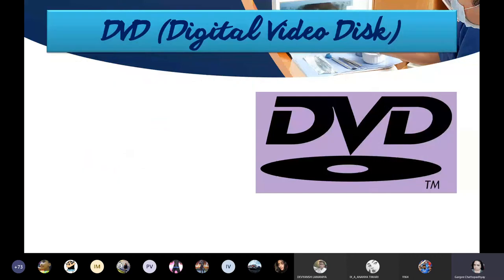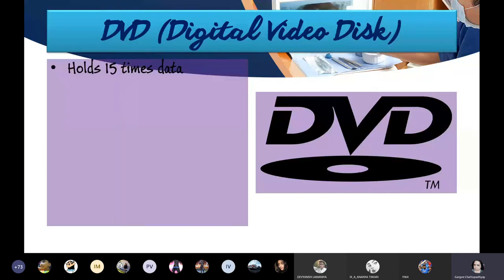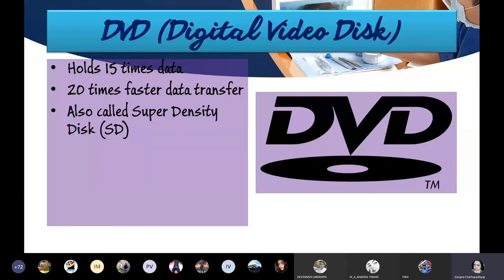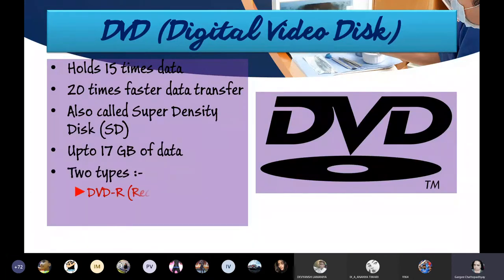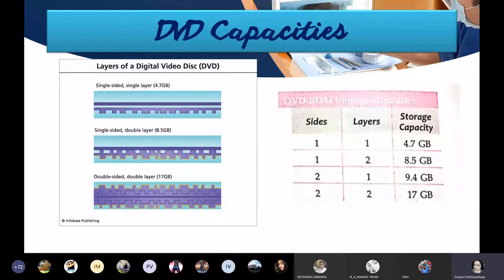Next is DVD. It holds 15 times more data compared to a CD and is 20 times faster in data transfer. It is also called super density disk or SD. Up to 17 GB of data can be held in a DVD. There are two types: DVD Recordable and DVD Rewritable. Single-sided single-layer holds 4.7 GB, single-sided double-layer holds 8.5 GB, and double-sided double-layer holds 17 GB.